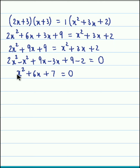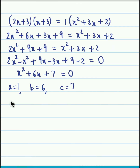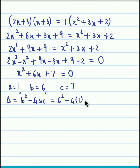If we compare with x squared plus bx plus c equal to 0, we obtain a as 1, b as 6, and c as 7. First we obtain the discriminant delta. Delta is calculated as b squared minus 4ac, so that is 6 squared minus 4 into 1 into 7, giving 36 minus 28. So the value of delta is 8.